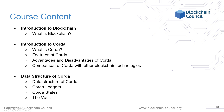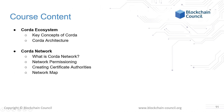Next, we will understand Corda data structure — what is the data structure of Corda, the types of data structure, the states, the ledger, and the vault. Then we will discuss the Corda ecosystem, in which we will see the basic key concepts of Corda and the Corda architecture.